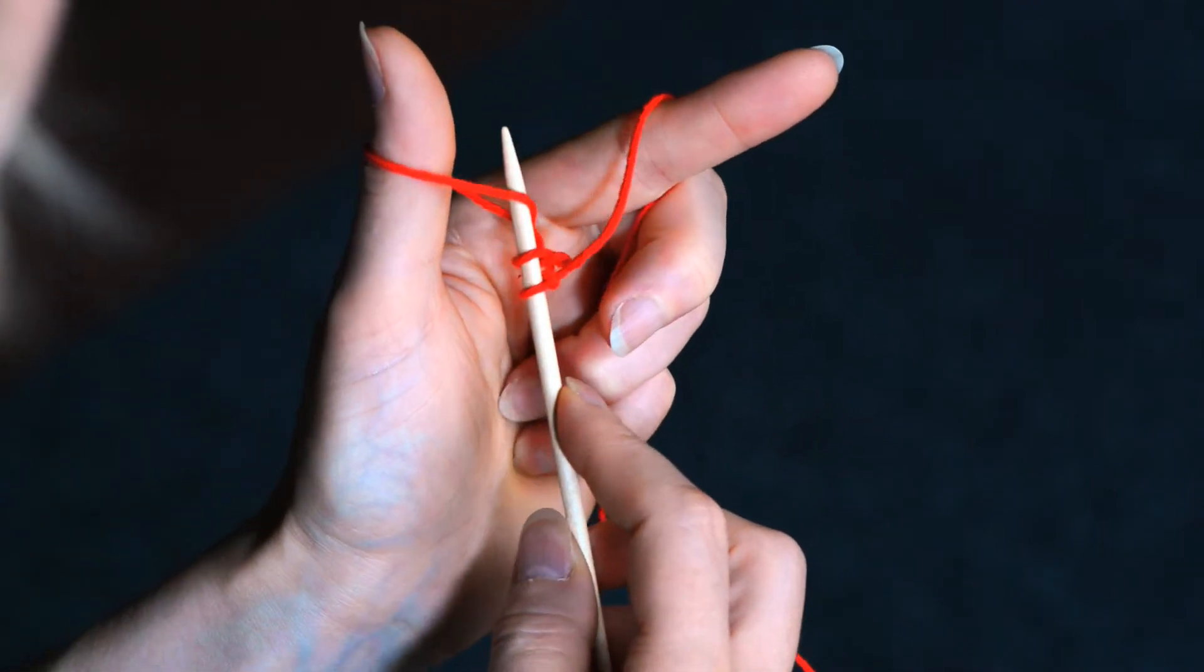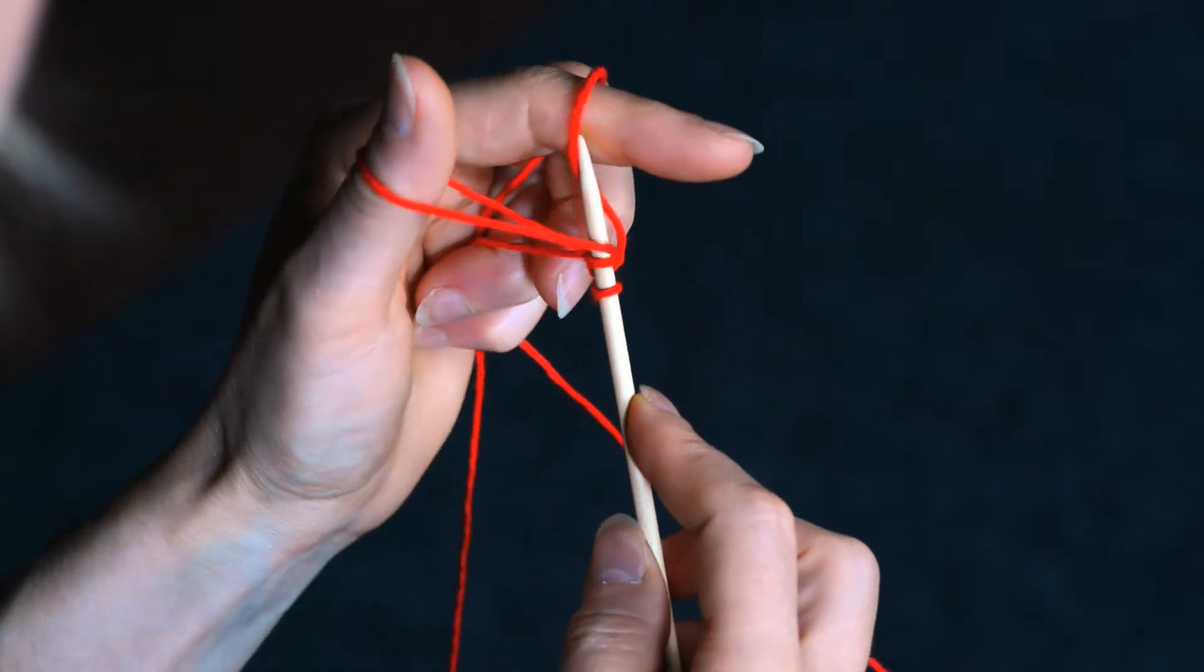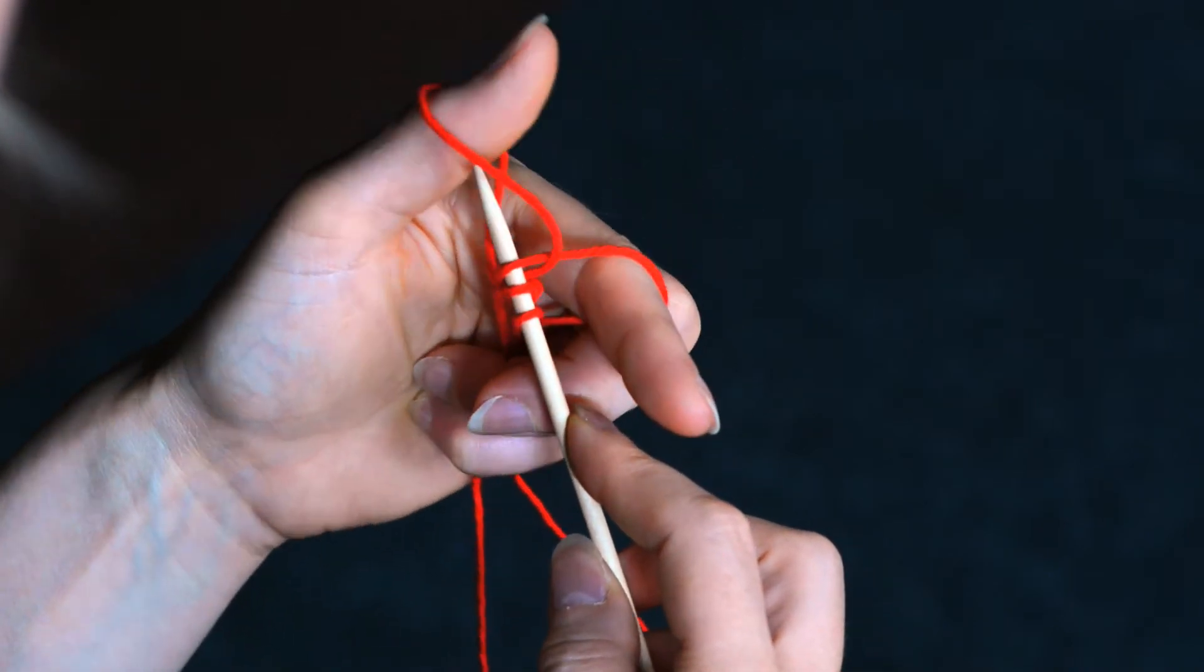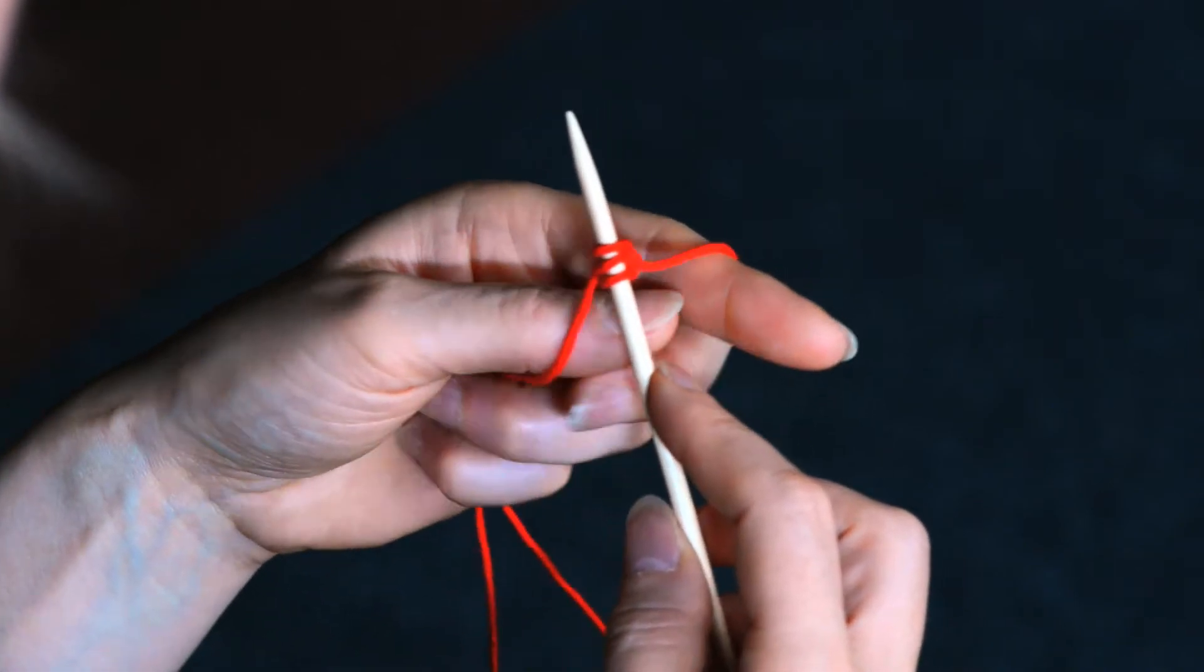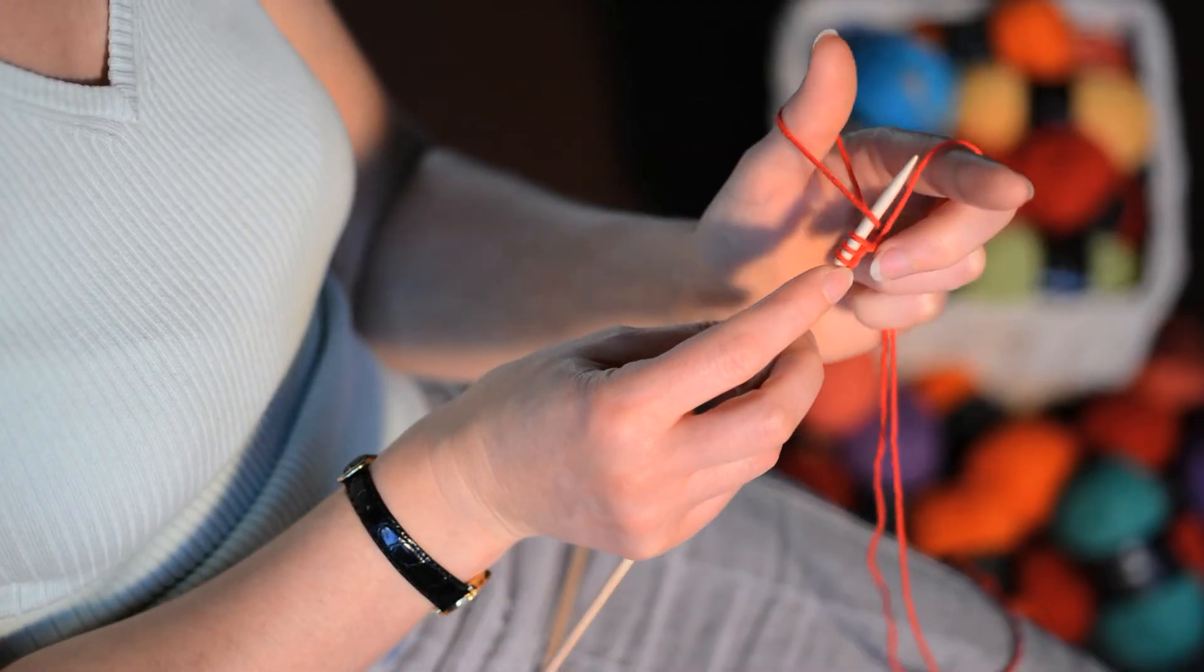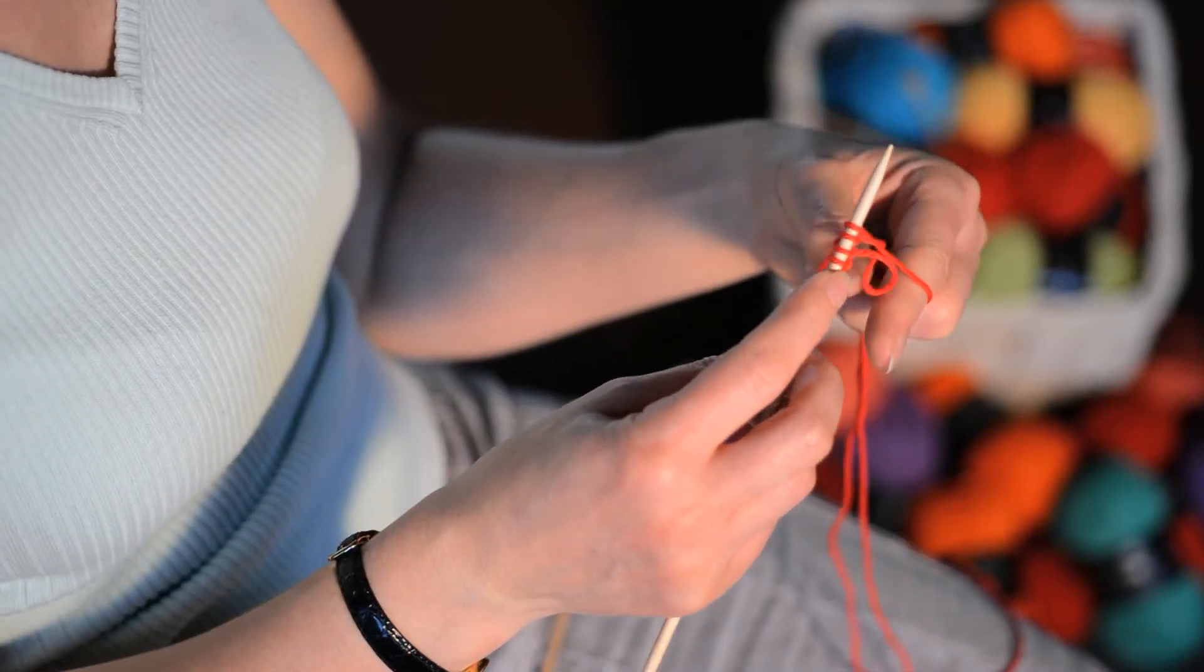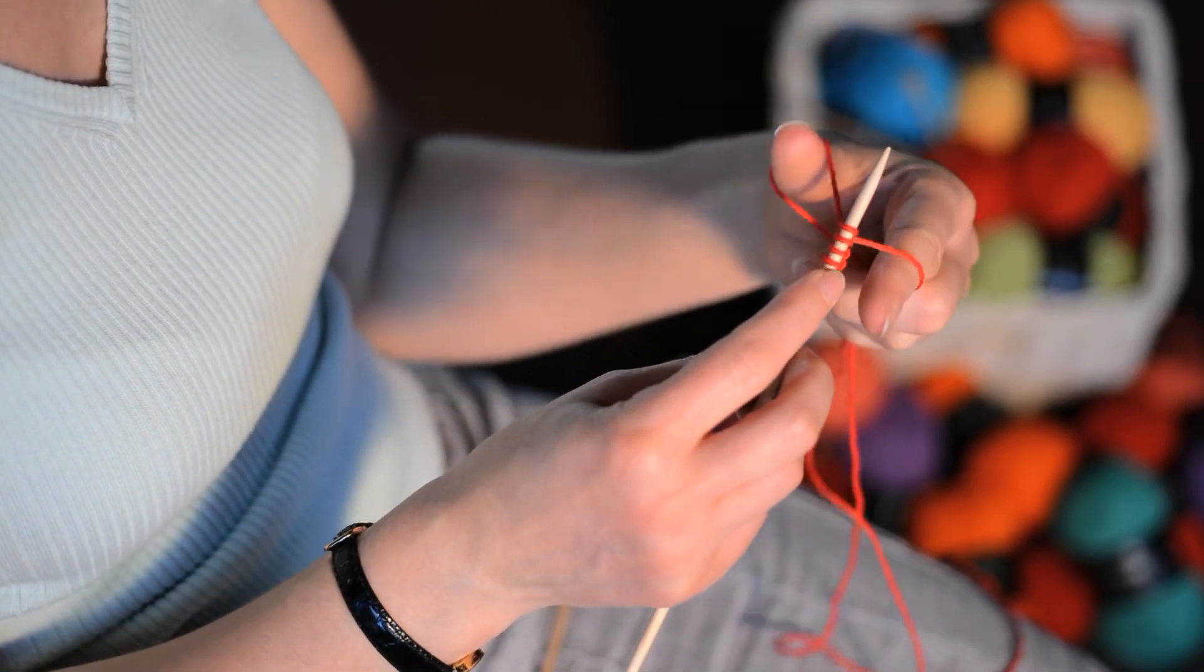Into the loop on your thumb, over to the yarn on your index finger, and pull it back through. And again, into the loop on your thumb, over to the yarn on your index finger, and pull it back through.